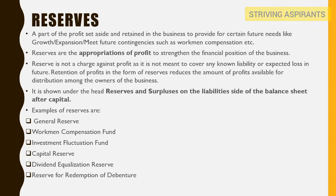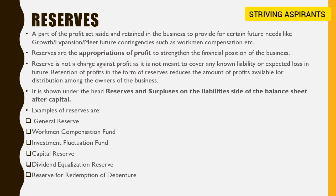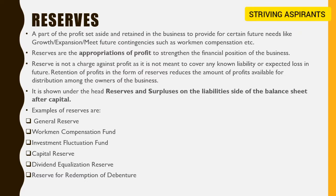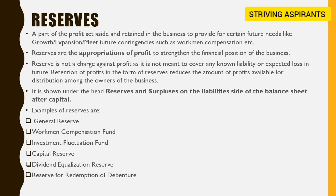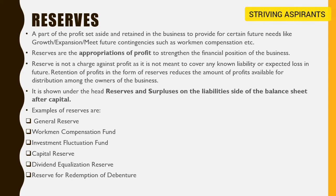Reserves are called appropriations of profit and this is not a charge against profit. This is created after the calculation of net profit, so it is meant to cover any non-liability or expected loss in the future. When we create reserves, that will reduce the profits of the owners of the business. In the balance sheet, reserves are shown on the liability side under reserves and surplus, after capital. Examples include general reserve, workman compensation fund, investment fluctuation fund, capital reserve, dividend equalization reserve, and reserve for redemption of debenture.